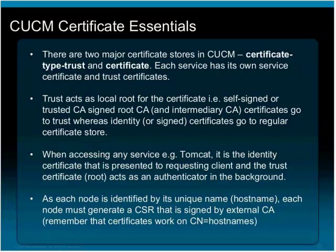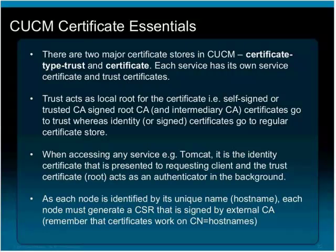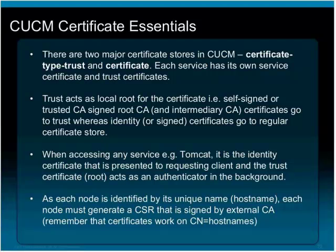There are two types of certificate stores: certificate type trust and certificate. The actual certificate is leveraged by the service, while the validity and identity of the certificate is authenticated in each transaction by the trust certificate. Trust acts as a local root for the certificate. It can be self-signed, third-party signed, or a CA root certificate. Essentially, trust acts as a root for whichever certificate service we want to leverage.